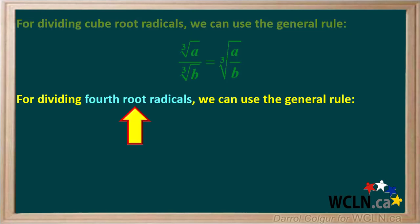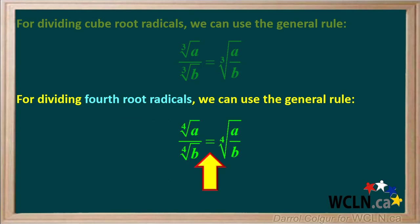And for dividing fourth root radicals, we can use the general rule: the fourth root of A divided by the fourth root of B equals the fourth root of A divided by B.